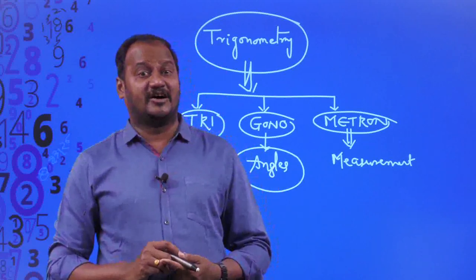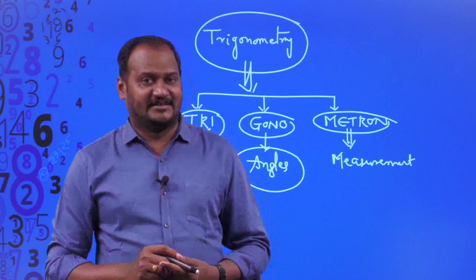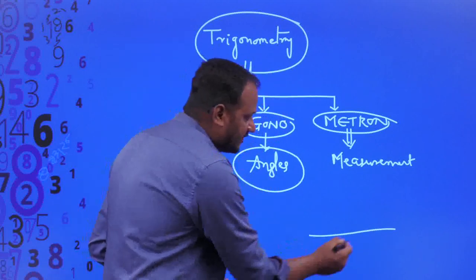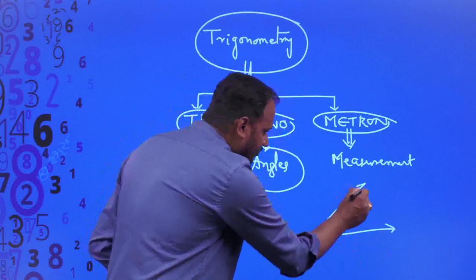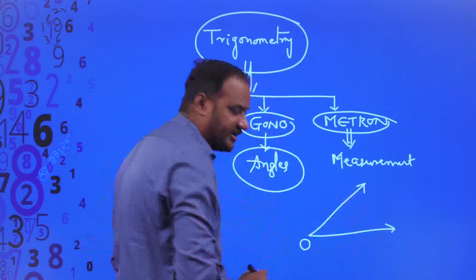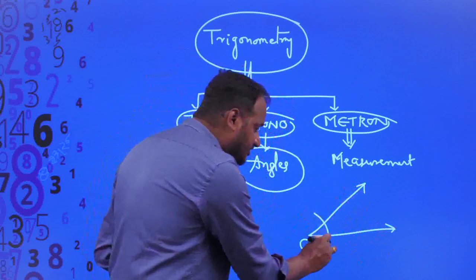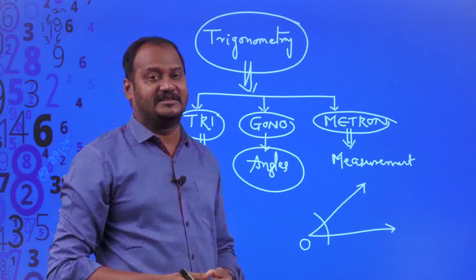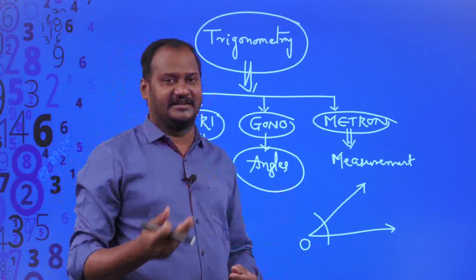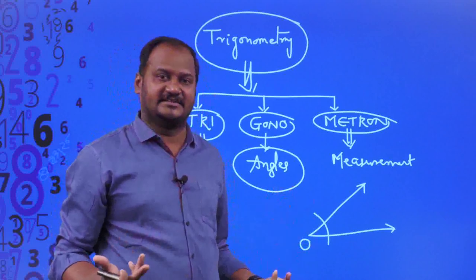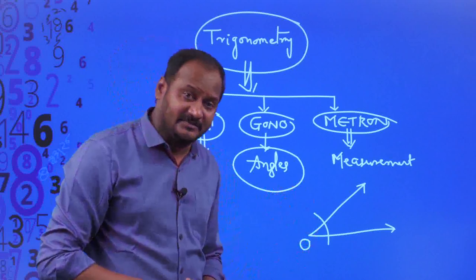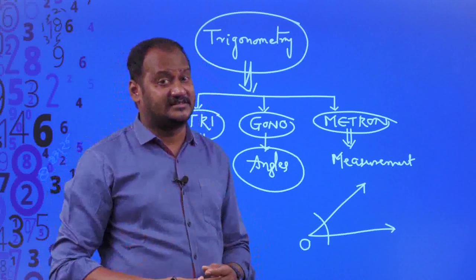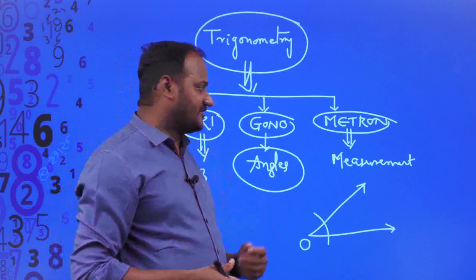What is the measurement of an angle? We say that two rays starting from an initial point O form an angle, and we simply say that angle is equal to 30 degrees, 40 degrees, 90 degrees, and so on. But apart from degrees, is there any other unit to measure an angle? That is what we need to think about.